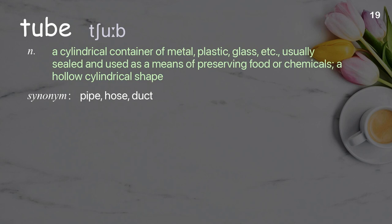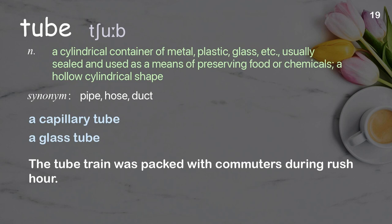Tube: a cylindrical container of metal, plastic, glass, etc., usually sealed and used as a means of preserving food or chemicals; a hollow cylindrical shape. Examples: a capillary tube, a glass tube. The tube train was packed with commuters during rush hour.